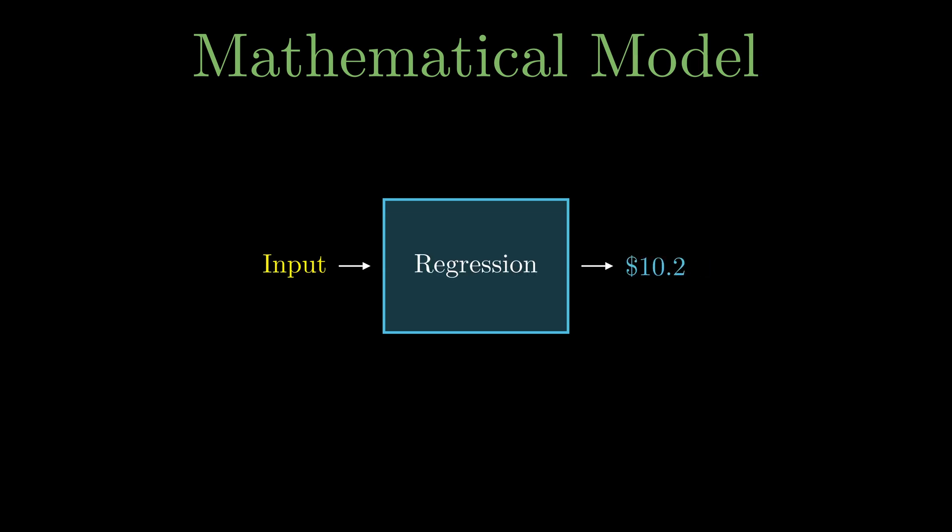Regression models predict a numerical value. That number could be the future price - for example, the model predicts the future price will be $10.20. The model might instead predict the price change (the delta) - here the model predicts the price will move down by $1.20. Or the model could predict the return (the percentage change) - here the model predicts the price will go up by 1%.